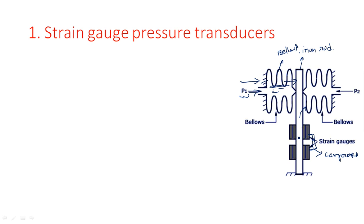Because the movement is in the right-hand direction, the right-side gauges are compressed, and the two gauges on the other side are getting elongated. Because of this compression and elongation, the resistance of the strain gauges will vary. When we connect these strain gauges in a bridge — used to measure resistance change — the electrical property can be calculated, which is proportional to the applied pressure.